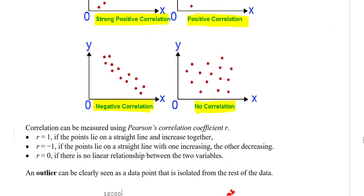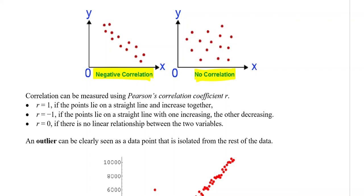To measure the strength of the correlation, we have Pearson's correlation coefficient, given the letter r. If r equals 1, all points lie on a perfectly straight line and they increase together. If r equals negative 1, the points are on a perfectly straight line with one increasing but the other decreasing—that's our negative gradient. If r equals zero, there's no linear relationship between the two variables. Obviously, you're not always going to have one of those three perfect scenarios—you might have a decimal in between like 0.85. We're not calculating those today, but we're just knowing they exist for now.